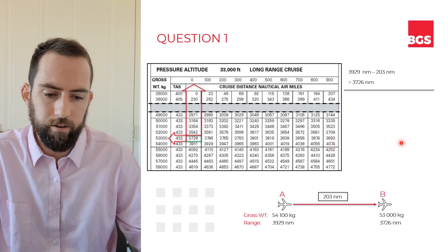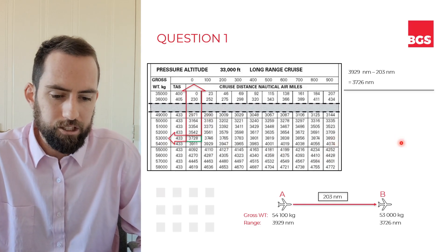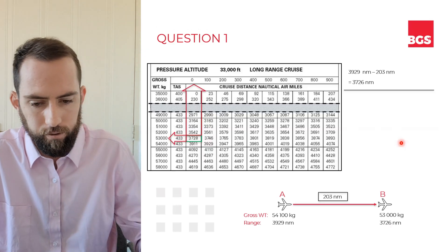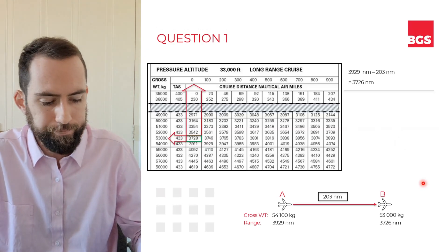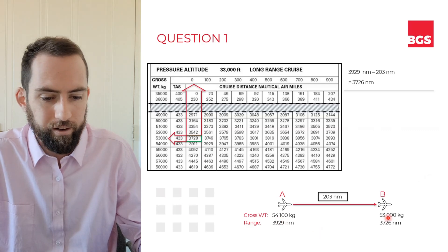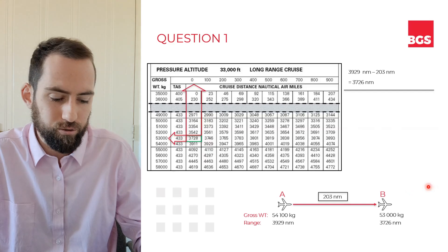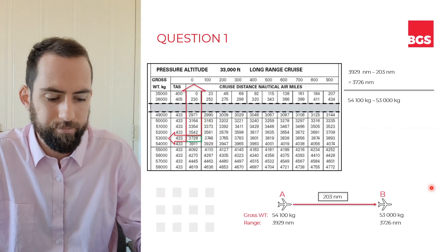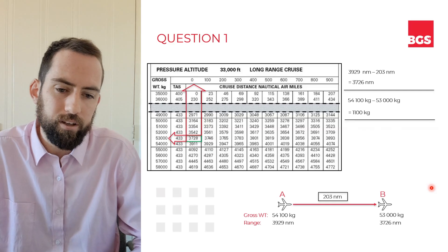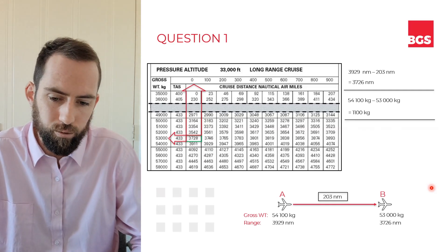Pop that into the diagram and we have a complete picture of the aircraft's journey from A to B. Given the aircraft weighed 54,100 kgs at A and 53,000 kgs at B, how much fuel was burnt off? Just subtract one from the other — 1,100 kgs has been burnt off during the course of the flight.